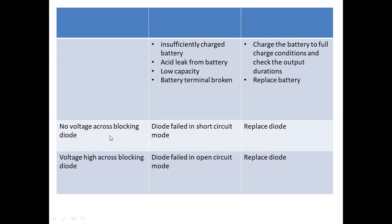Next, no voltage across the blocking diode. Blocking diode and bypass diodes are two different diodes. Blocking diodes are used in the string control box. The blocking diode blocks reverse current flow and prevents short circuit. The bypass diode is a separate component used alongside the blocking diode in string control boxes.